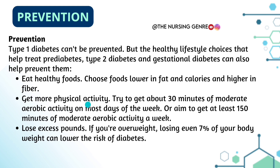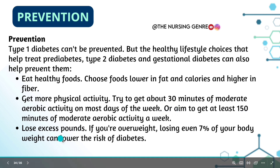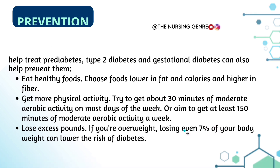Get more physical activity. Try to get about 30 minutes of moderate aerobic activity on most days of the week — aim for at least 150 minutes of moderate aerobic activity per week, such as jogging. If you are overweight, losing even 7% of your body weight can lower the risk of diabetes.